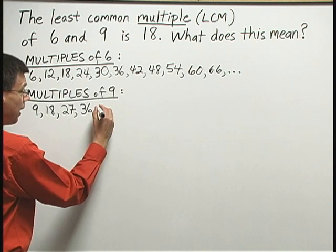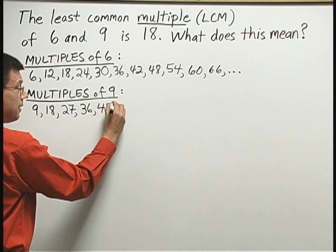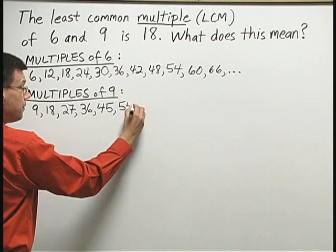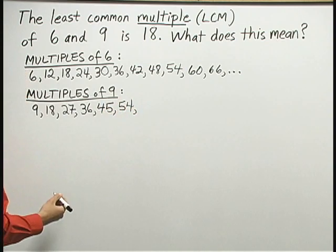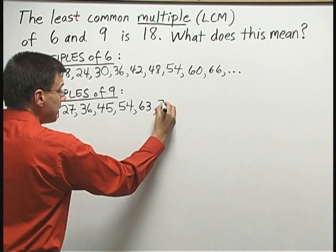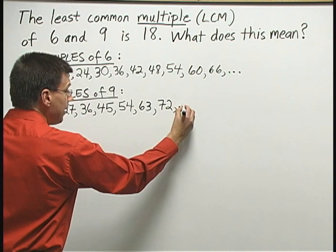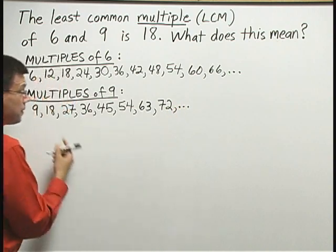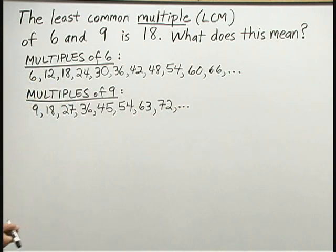9 times 5 is 45. 9 times 6 is 54. 9 times 7 is 63. 9 times 8 is 72. And again, I've got to stop at some point. These multiples go on and on forever. I've just listed several of them.